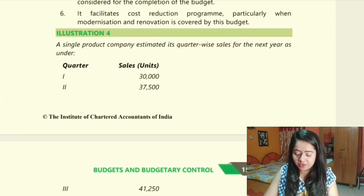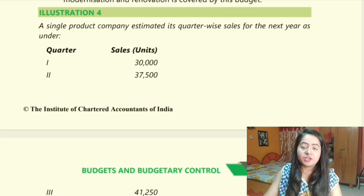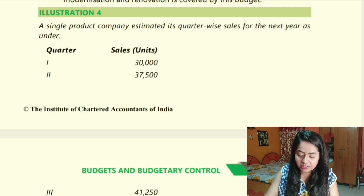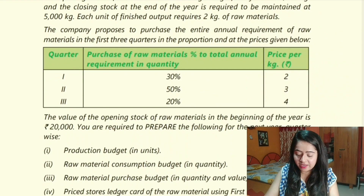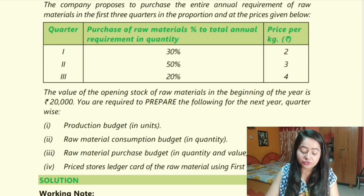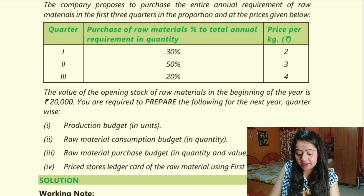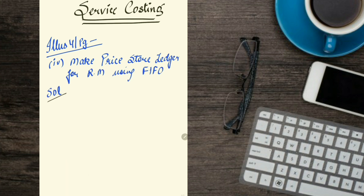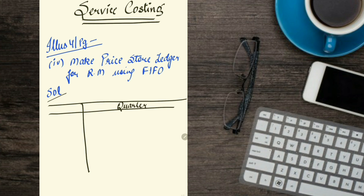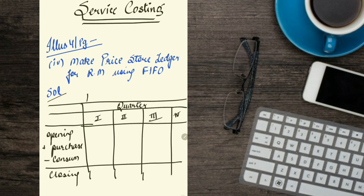For example, in costing under budgets and budgetary control, say you're solving illustration number four. You solve part one, two, and three properly, but part four is the tricky point — you're supposed to make a priced stores ledger card for the raw material and you don't know how to do that. In your notes, write: 'Illustration 4, page number X — part 4 is the tricky part,' and then draw the format of the priced stores ledger card.